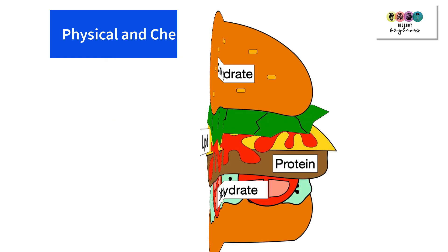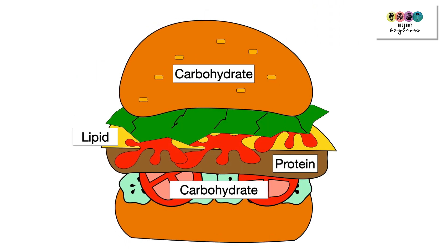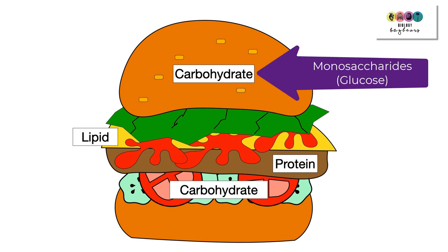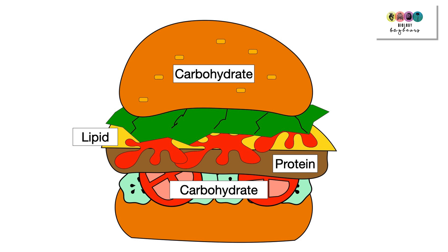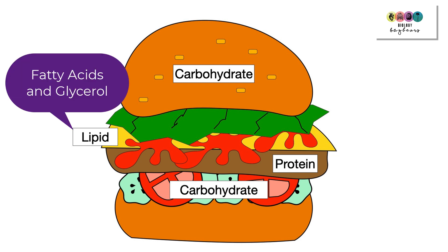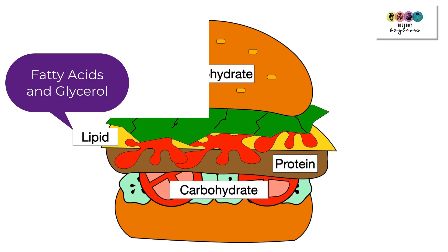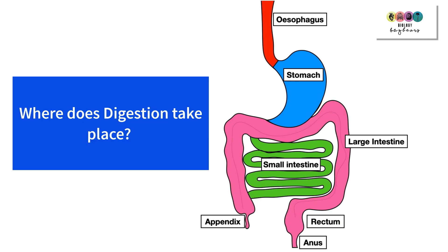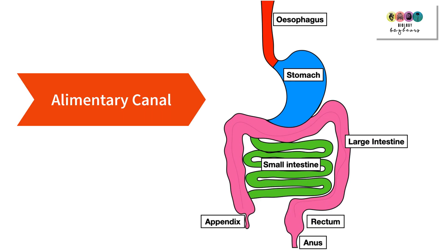Digestion is really just the story of what happens when we eat something — for example, a cheeseburger, which contains all those biomolecules. In digestion, the carbohydrates are physically and chemically broken down to eventually end up as monosaccharides such as glucose. Proteins are eventually broken down into amino acids, and lipids are eventually broken down into fatty acids and glycerol.